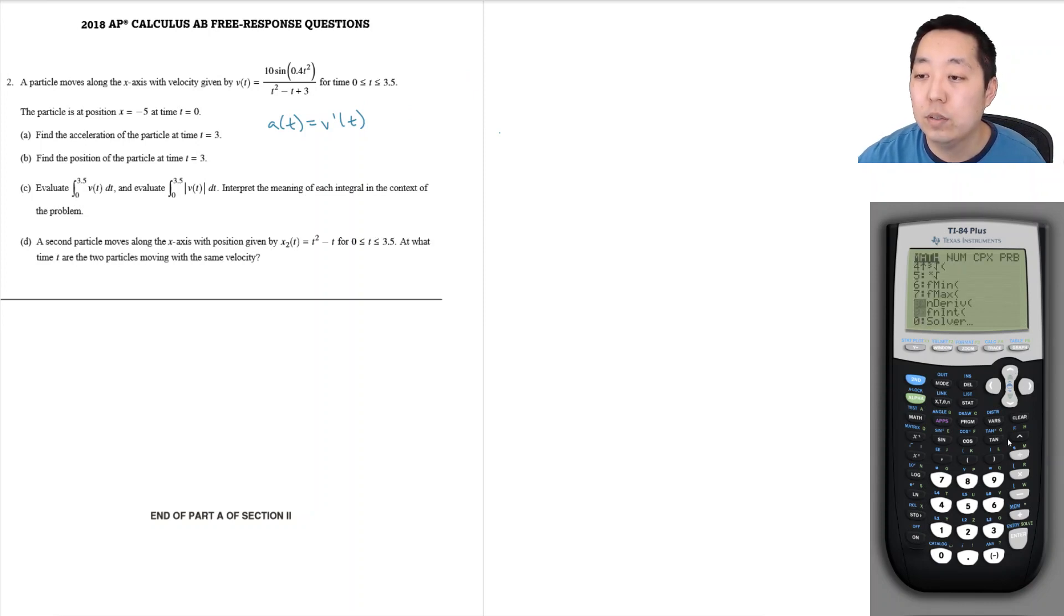Math. I don't usually do derivatives too often on my calculator but this is 10.4x squared divided by x squared minus x plus 3, derivative with respect to x and we're plugging in 3. It's equal to negative 2.118.